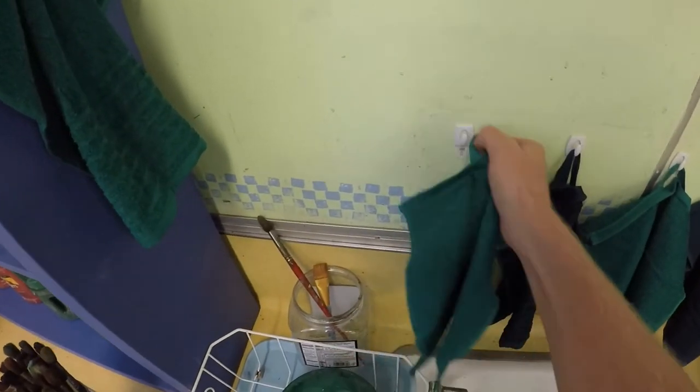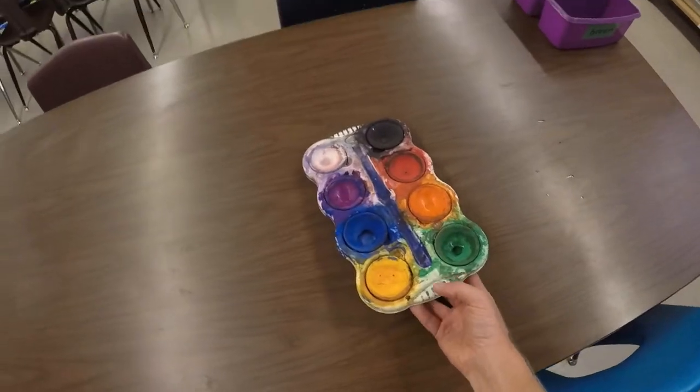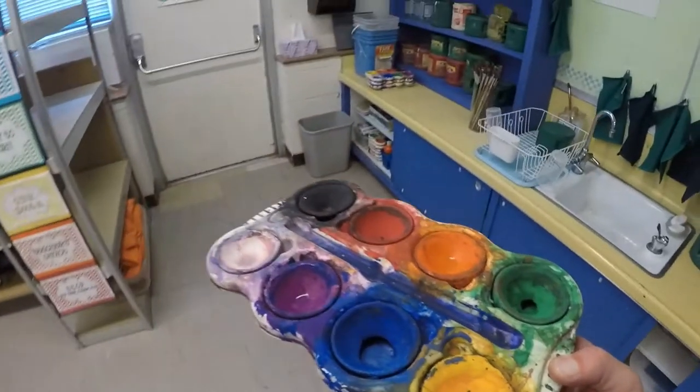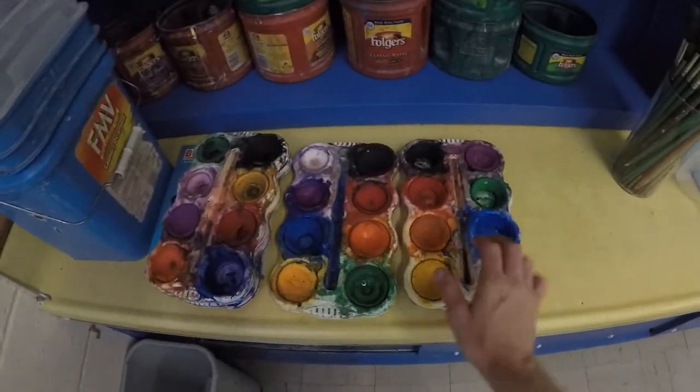Paint trays are simple to put away. We want to leave them unstacked if they're wet. If the paint trays are really wet, don't stack them or the paint gets smushed. If they're wet, just lay them out in a row like this so they can dry.